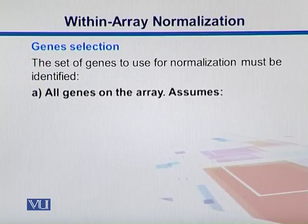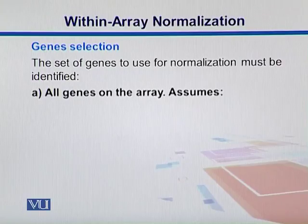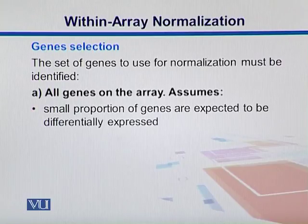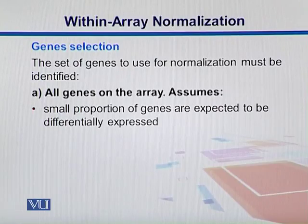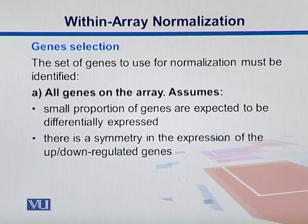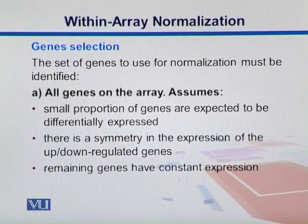While selecting genes for microarray experiments, the set of genes must be identified. You might have all genes on the array, and it assumes that a small proportion of genes are expected to be differentially expressed. Within those genes, you have a smaller proportion that is differentially expressed, and there is a symmetry in the expression of up and down regulated genes. Remaining genes, which are not differentially expressed, have constant expression.